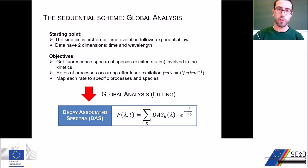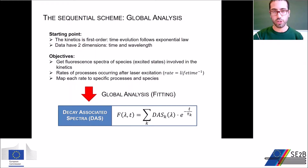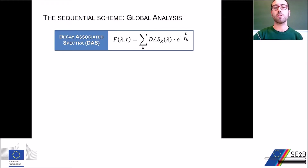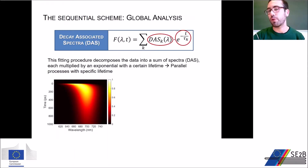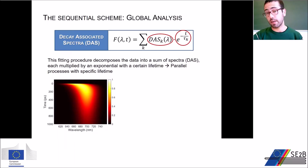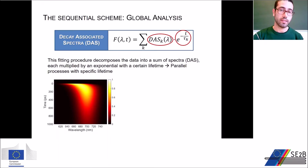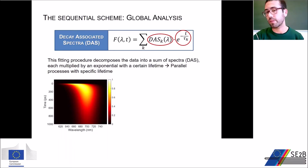What we normally do first is a so-called global analysis, which means analyzing all the wavelengths with the same set of exponentials. What we get from this kind of analysis is a decomposition of our data into a discrete set of spectra as a function of wavelength, each associated with an exponential with a specific lifetime tau. These spectra are called DAS, which stands for decay-associated spectra. Each DAS represents a spectral change due to a specific process taking place at the excited state, and each process is associated with a specific lifetime tau.